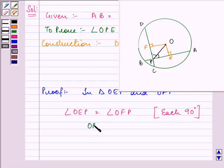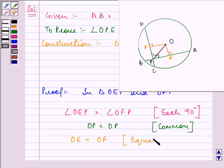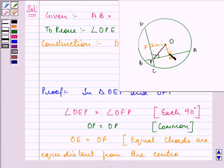OP is the common side. OE is equal to OF because equal chords are equidistant from the center. So, the distance are equal to each other.